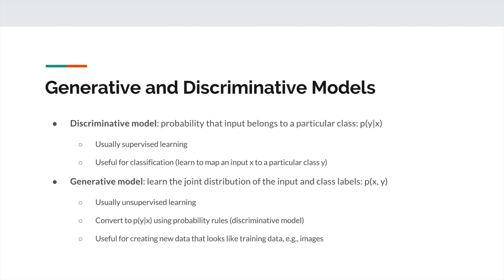The new stuff here is we have these things called generative models. These generative models, instead of giving them an input and building a probability distribution across the classes, what you're actually learning is the joint distribution of the inputs and the class labels. This is different because you're not only building a probability distribution over the outputs — you're also building it over the inputs as well.